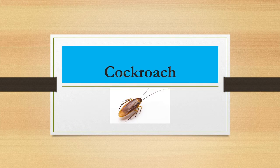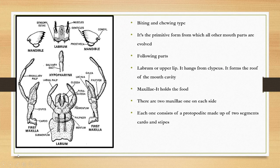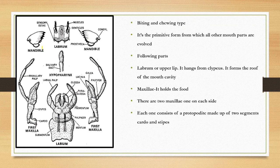Let's look at the mouthparts of cockroach. This is the labium, also called the lower lip, and this is the labrum, called the upper lip. Underneath there will be mandibles — these are the mandibles, like teeth. This is called the hypopharynx, or tongue. These two are called the first maxilla and the other first maxilla. These are the different parts of the mouthparts of cockroach.